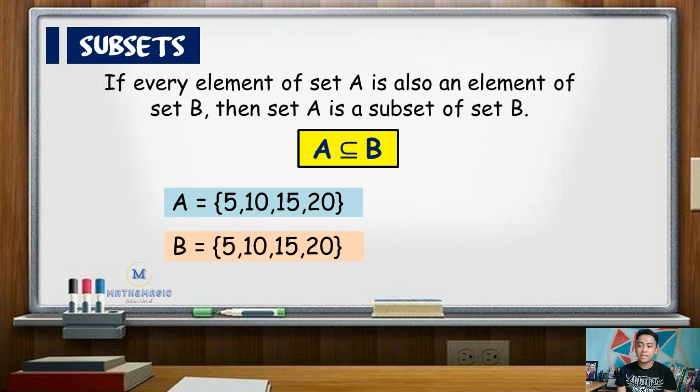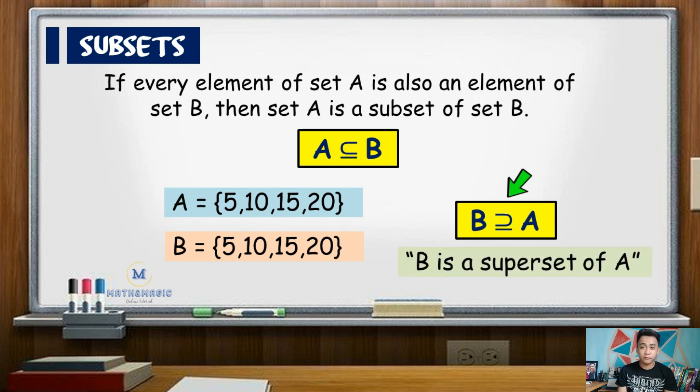So that means that set A is a subset of set B since all of the elements in set A are also found in set B. You may also use this symbol which means superset. So in this example, we can say that B is a superset of set A.